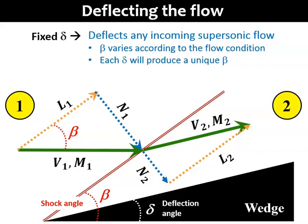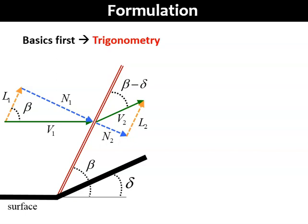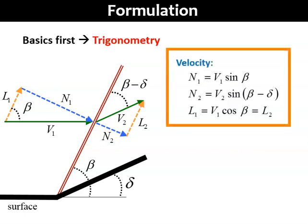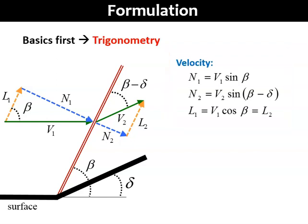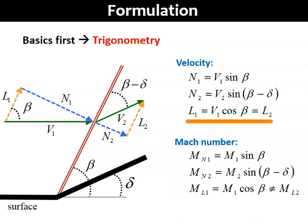To answer this, we need to formulate our equations. Let's go to the basics first, which is the trigonometry of the problem. We need to define one more angle, which occurs after the shock. It's beta minus delta, and you can prove this to yourself easily. From the trigonometry, you can work out the velocities N1, N2, and L1 in terms of V1 and the angles. You can also define them in terms of their Mach number, MN1, MN2, and ML1, and ML2. Note that even though L1 equals to L2, ML1 is not equal to ML2. This is because the temperature T1 and T2 are not the same. It's important to highlight here that the Mach number equations are very important. MN1 equals to M1 sine beta, and MN2 equals to M2 sine beta minus delta. These two equations will be used to derive our equations and to solve our problems on oblique shock.